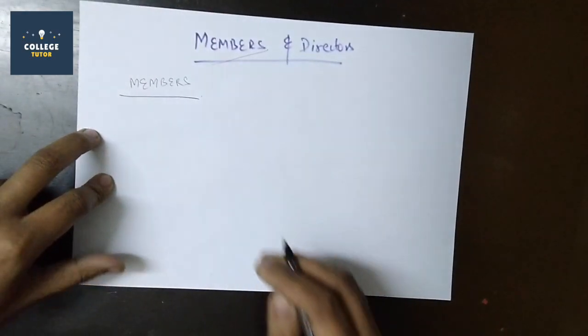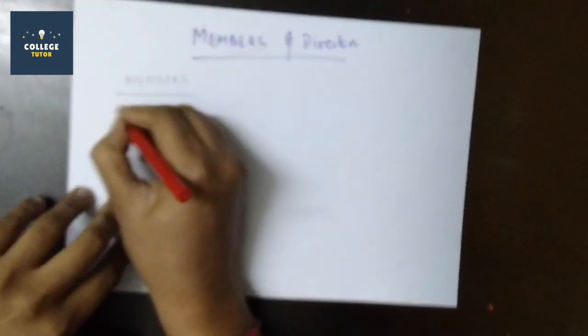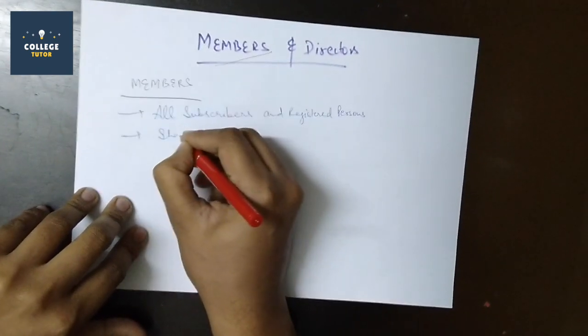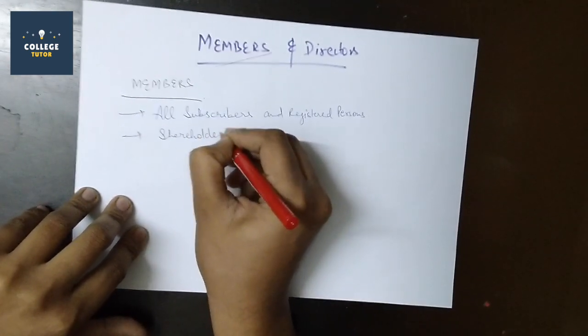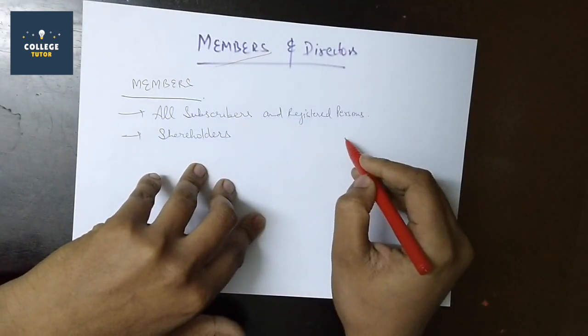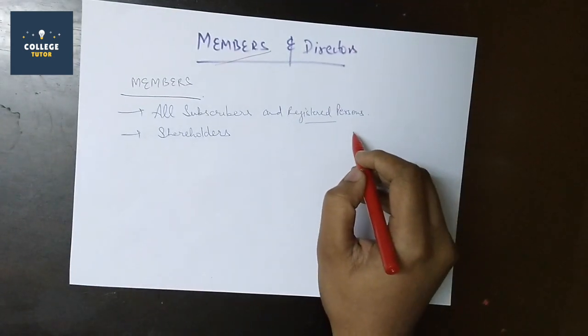The first question is, who are members? What are members? We will understand there are many subscribers and registered persons who are members, including those who are registered and all the employees.